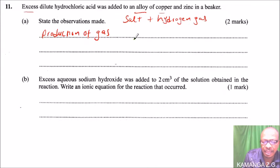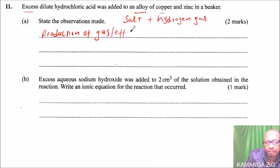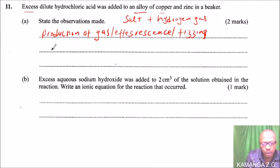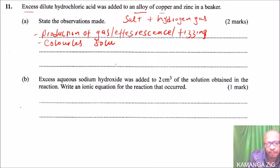Depending on how the setup is done, you may be able to see bubbles, which we also call fizzing. That's one observation. Because we have a solution here, we have zinc chloride, so we observe a colorless solution. Then, because copper will not react, we have brown residue.